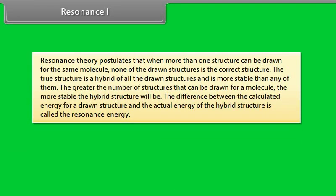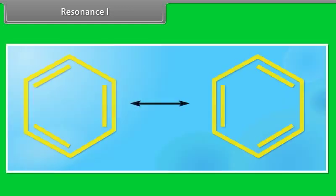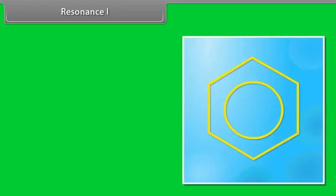Resonance theory postulates that when more than one structure can be drawn for the same molecule, none of the drawn structures is the correct structure. The true structure is a hybrid of all the drawn structures and is more stable than any of them. The greater the number of structures that can be drawn for a molecule, the more stable the hybrid structure will be. The difference between the calculated energy for a drawn structure and the actual energy of a hybrid structure is called the resonance energy. The two Kekulé structures that can be drawn for the benzene molecule are actually two resonance structures.